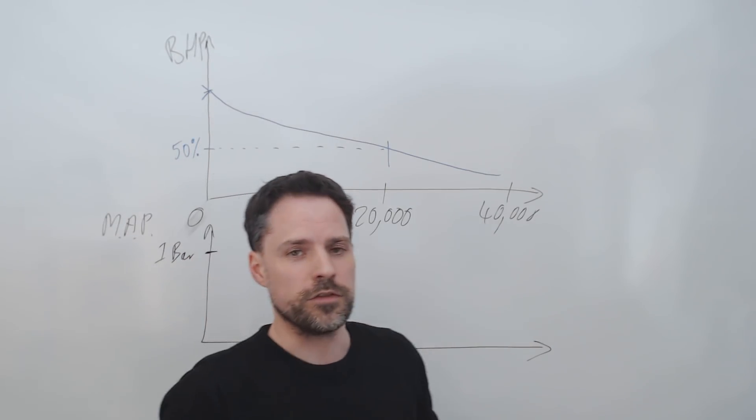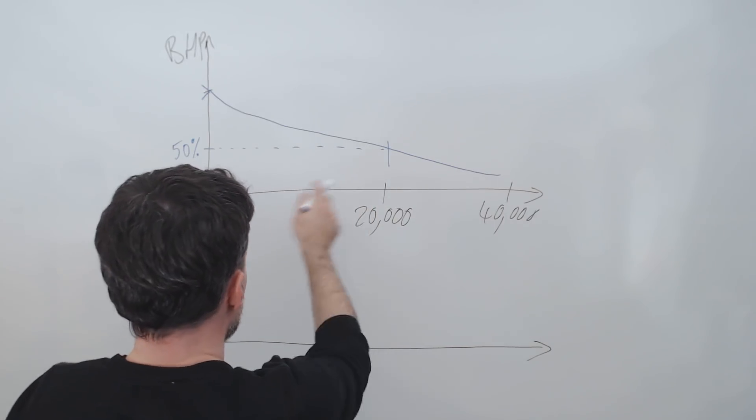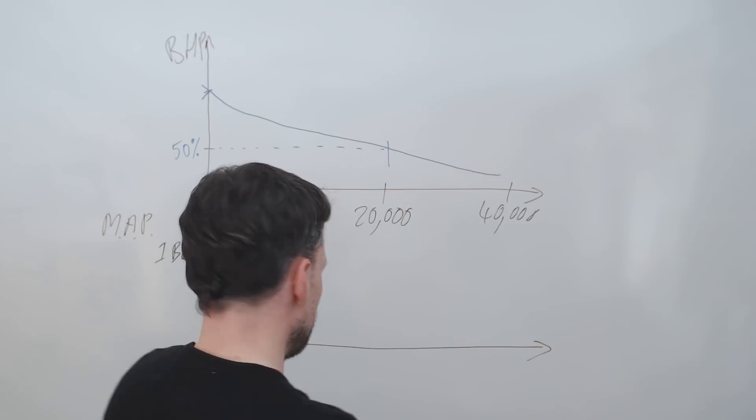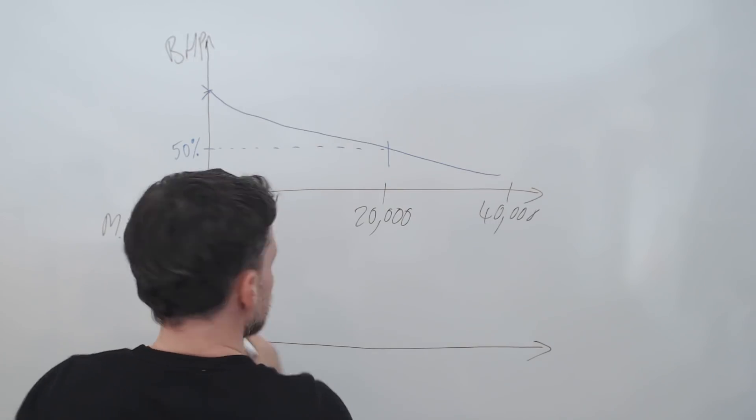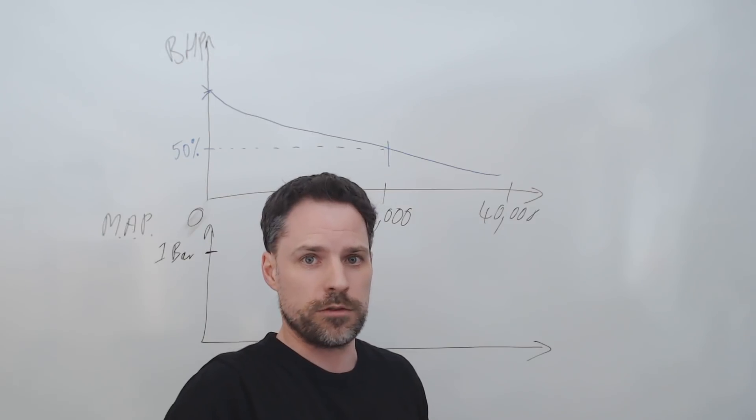So what we're saying is at 20,000 feet, if we take this line back, we get exactly the same show up with the manifold pressure. So the manifold pressure at sea level is going to be one bar because we've got no supercharger and air pressure at sea level is one bar.